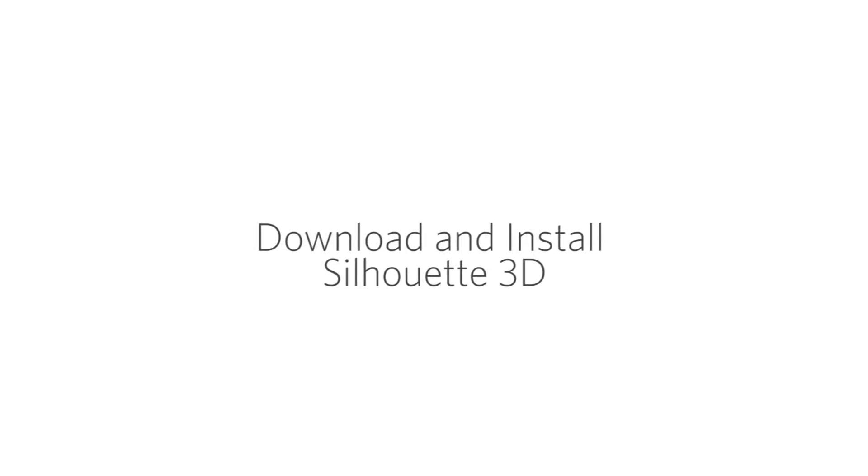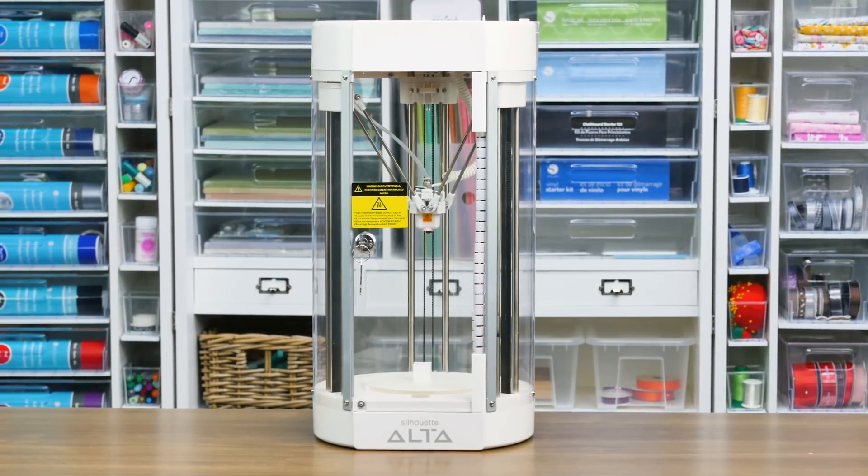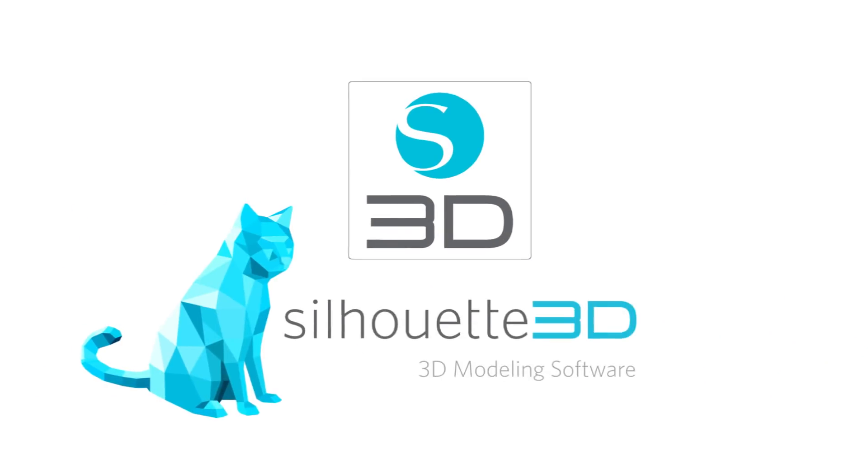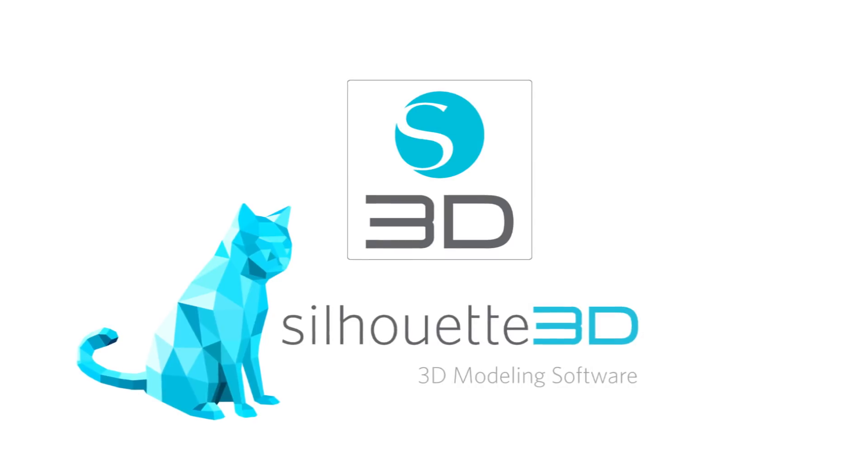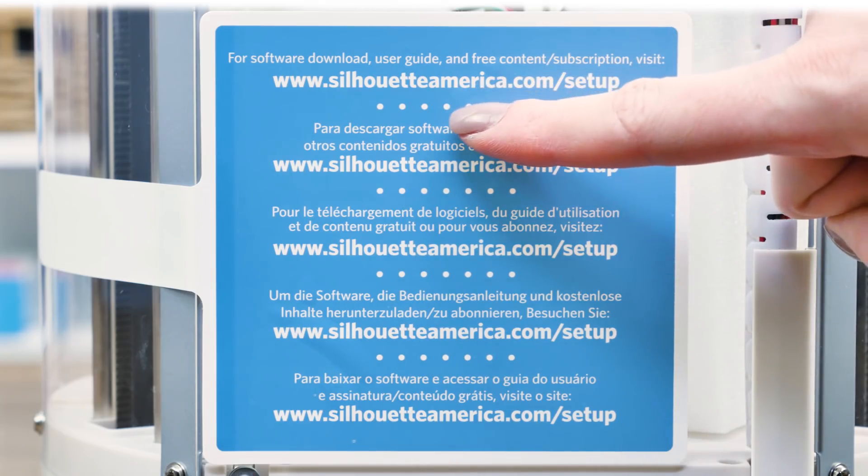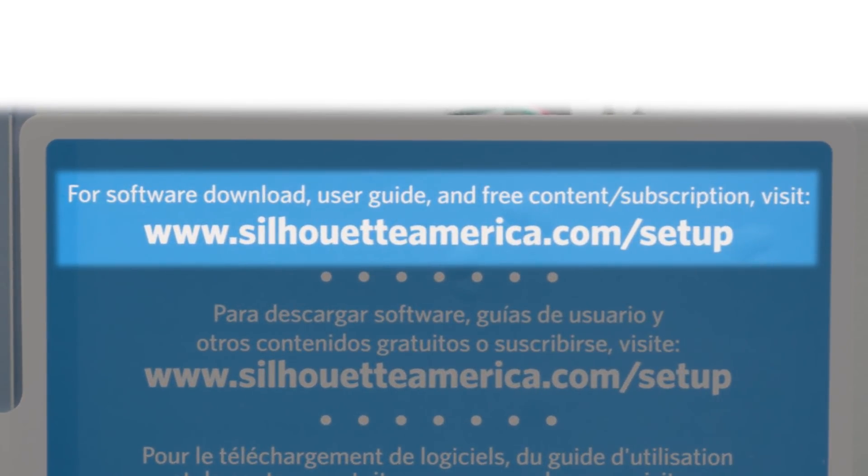Download and install the Silhouette 3D software. Now that your machine is out of the box, you're ready to download and install the Silhouette 3D software. To download the software, go to SilhouetteAmerica.com/setup.